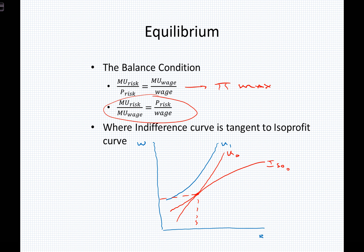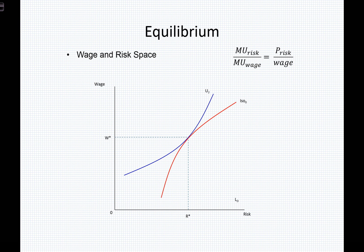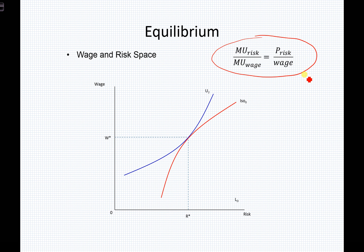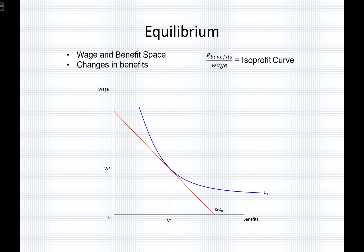When we see the indifference curve tangent to the isoprofit curve, what we're really seeing is where workers and firms are meeting or matching, and where the worker is accepting the firm's offer. This is the formation of the equilibrium in wage and risk space, built on the premise that the marginal utility of risk equals the marginal utility of wage — the indifference curve equaling the price of risk divided by the wage, which is simply the isoprofit curve or the marginal rate of substitution for the firm. We see that both are upward sloping — one convex, the other concave — in wage and risk space. They look different in wage and benefit space, where they are downward sloping.